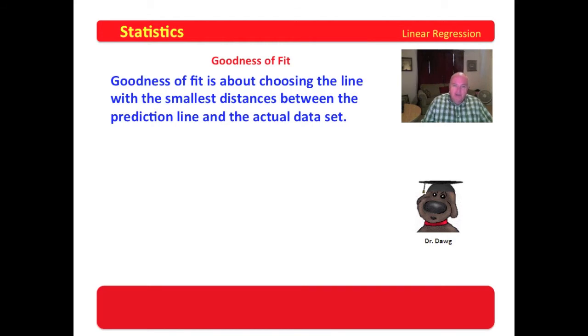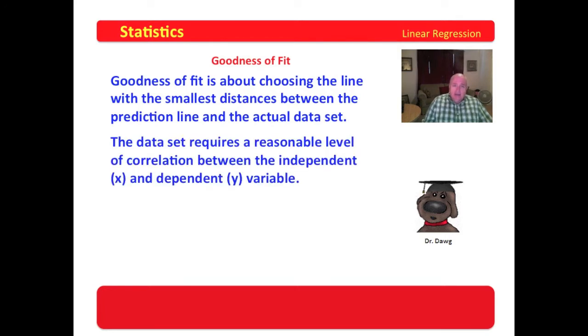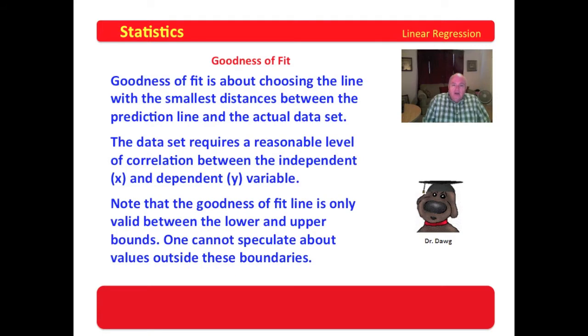Goodness of fit is about choosing the line with the smallest distance between the prediction line and the actual data set. The data set requires a reasonable level of correlation between the independent x and dependent y variable. Note that the goodness of fit line is only valid between the lower bounds and the upper bounds of the data set. One cannot speculate about values outside these boundaries.